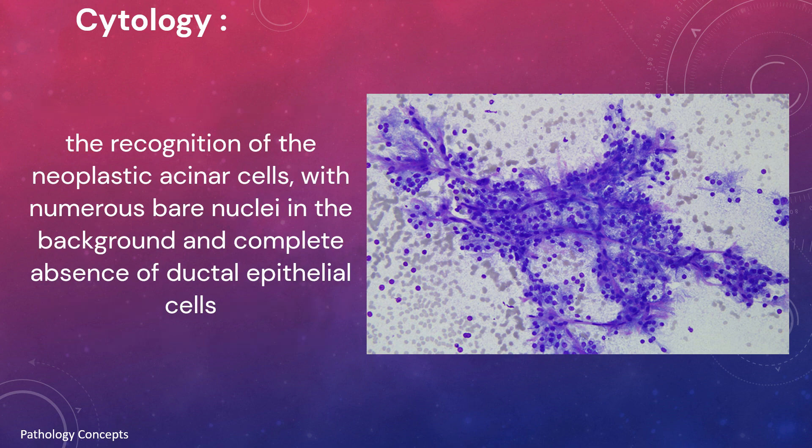The smear shows a lobular and grape-like cytoarchitectural arrangement similar to that seen in aspirates from normal salivary gland tissue. The key to accurate cytological diagnosis of acinic cell carcinoma lies in the recognition of neoplastic acinar cells with numerous bare nuclei in the background and complete absence of ductal epithelial cells.